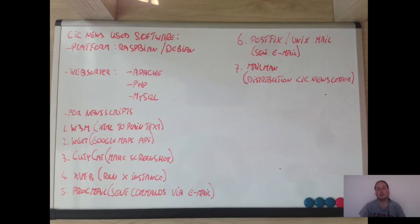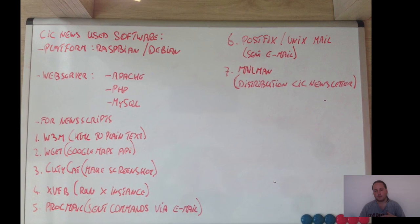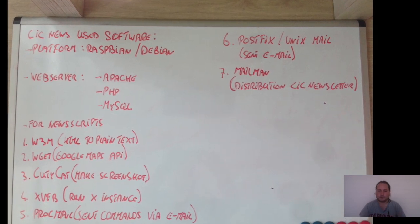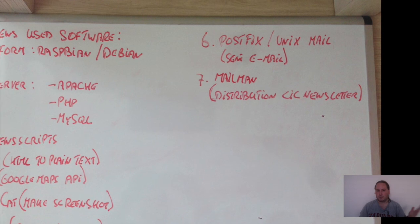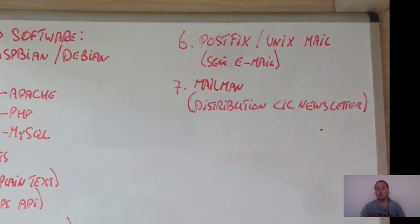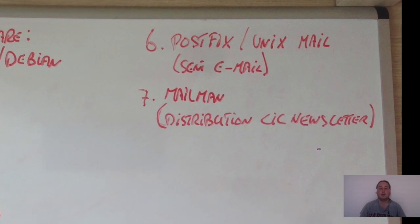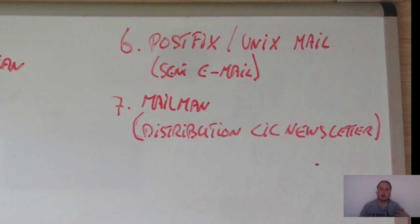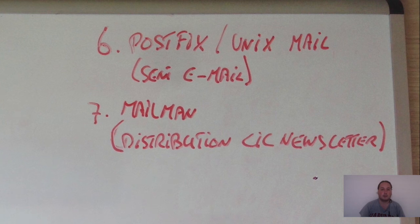The sixth is Postfix, of course a Unix mail server and mail delivery agent. Last but not least, I'm using Mailman — which is used for distribution via mailing list of the newsletter, so people can subscribe and unsubscribe to the newsletter. Mailman is used to do that.